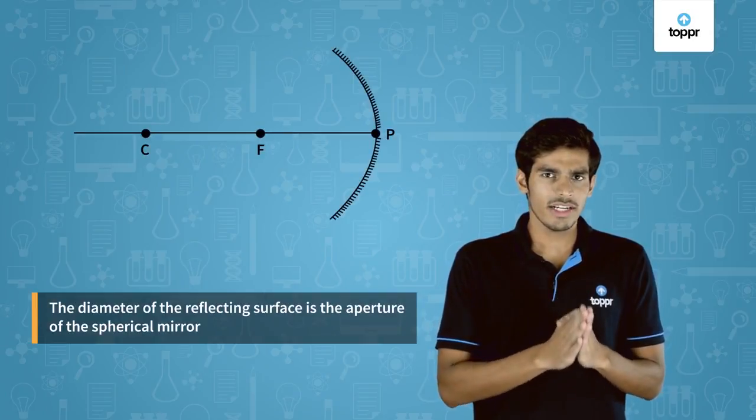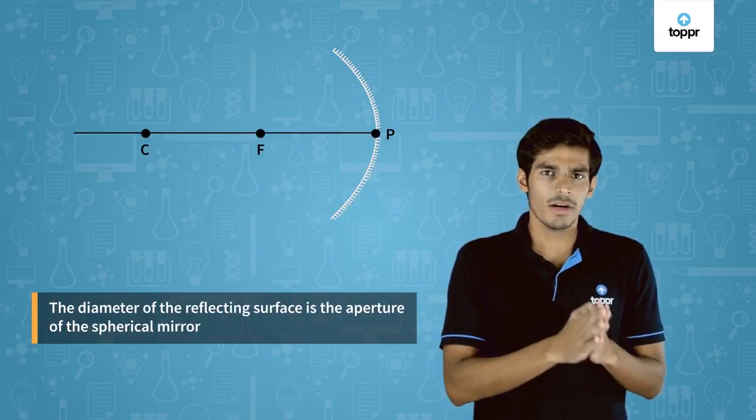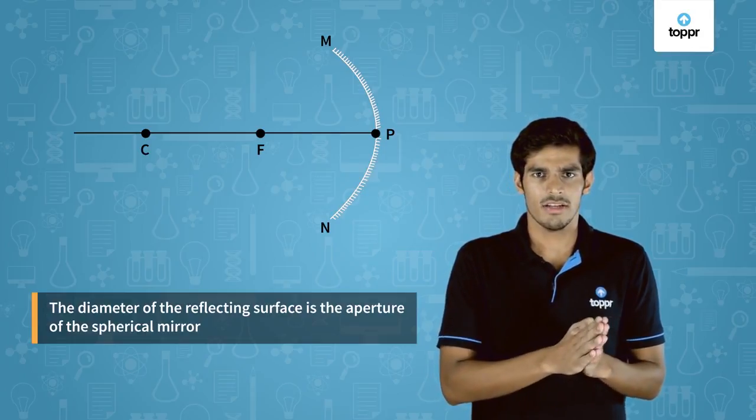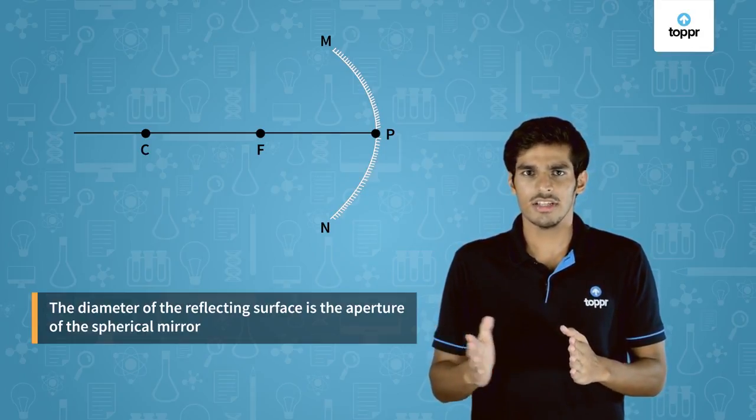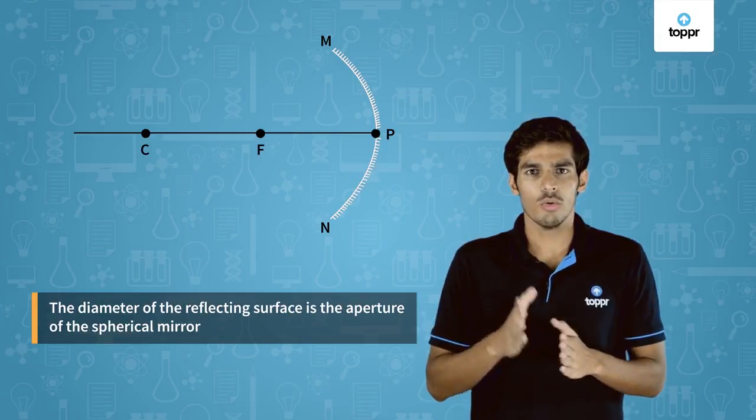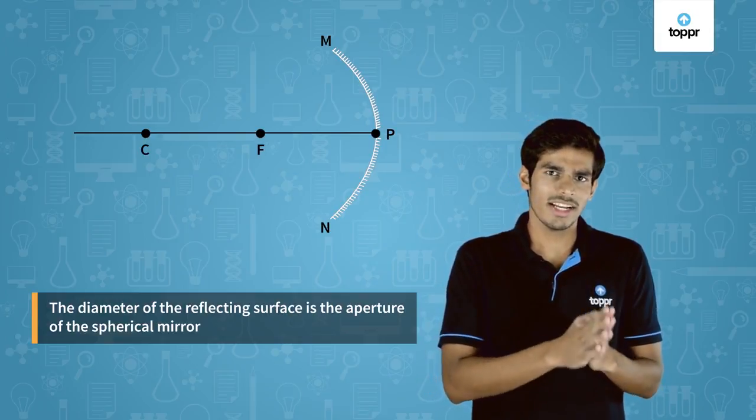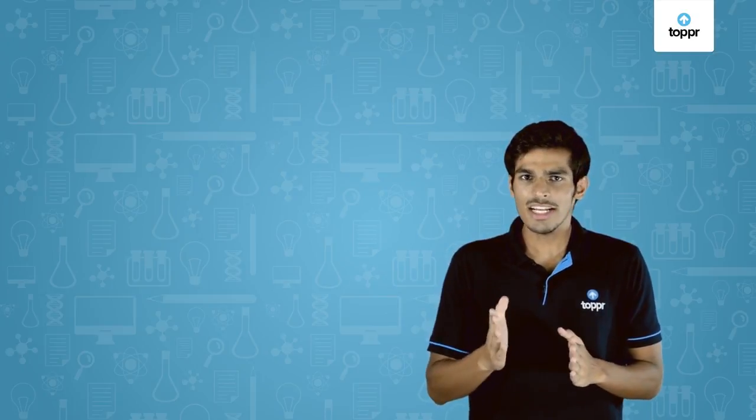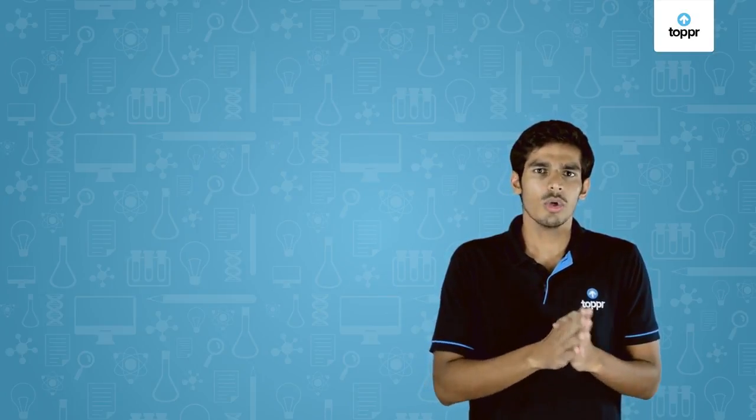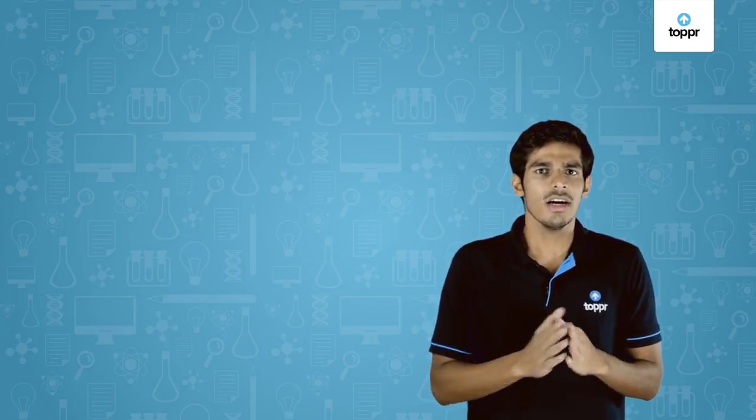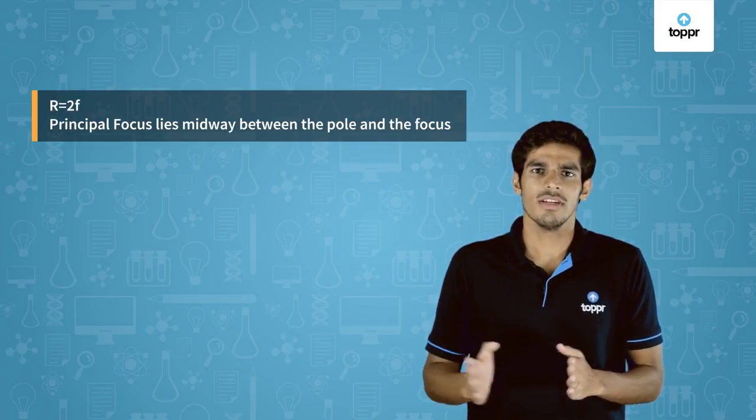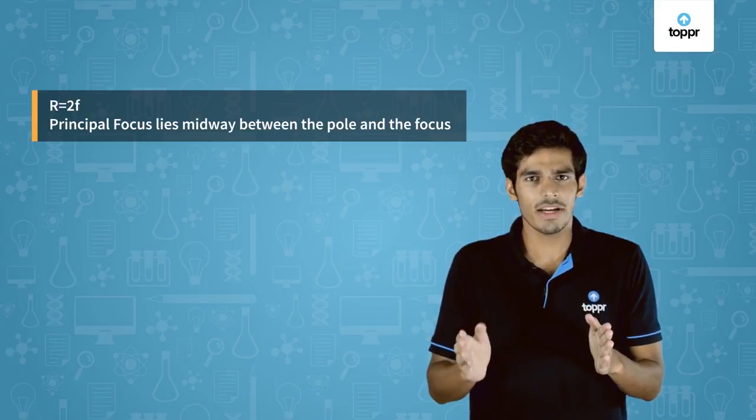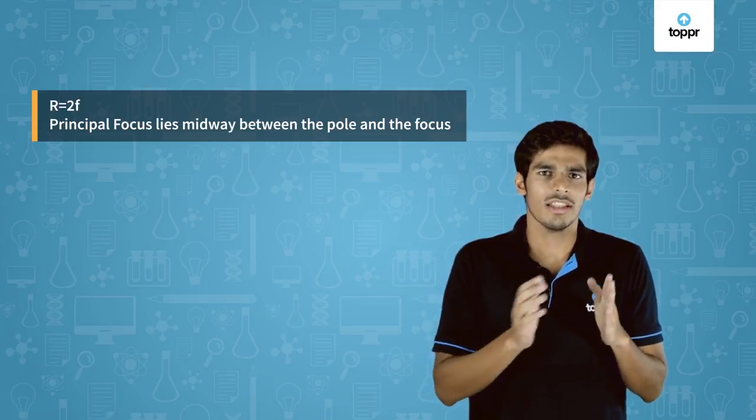The diameter of the reflecting surface is called the aperture of a spherical mirror and it is represented by mn. In our entire discussion we'll only work with mirrors whose apertures are smaller than the radius of curvature. For spherical mirrors with a small aperture, the radius of curvature is equal to twice the focal length, that is r is equal to 2 times f. This implies that the focus lies exactly midway between the center of curvature and the pole.